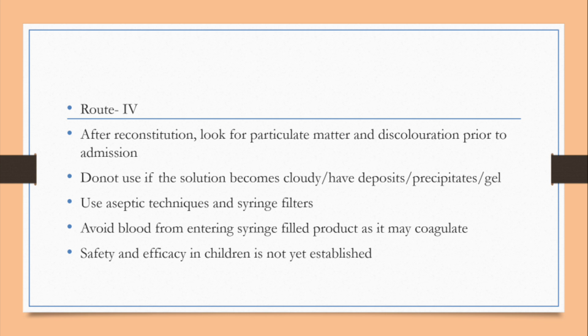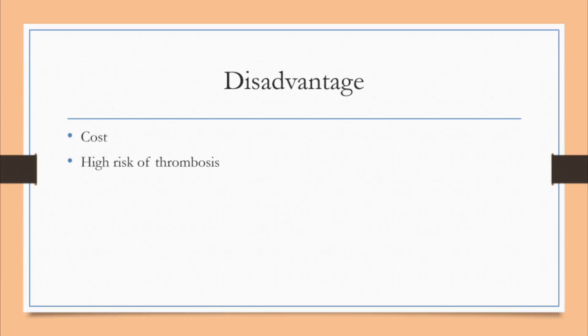The disadvantages of four-factor PCC are cost and thrombosis risk. One vial contains only 250 international units and costs about 14,000 rupees; administering 2500 units would require approximately 1.4 lakhs. Additionally, if blood backflow occurs during administration, the entire product can be damaged, with a high risk of clotting and thrombosis.